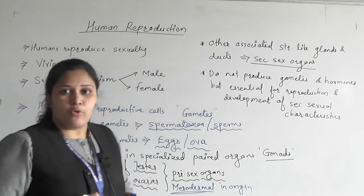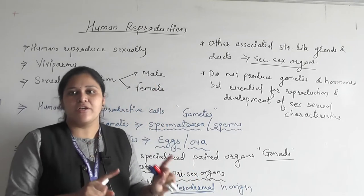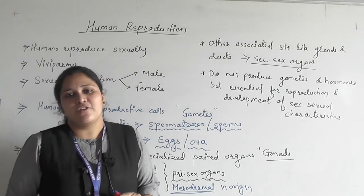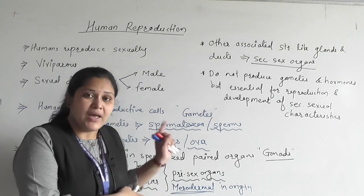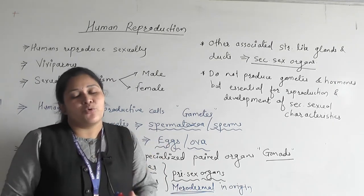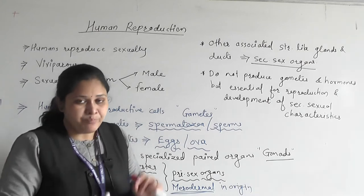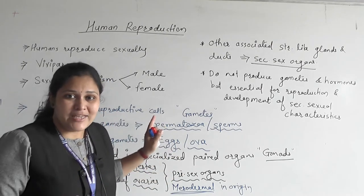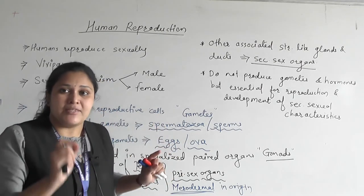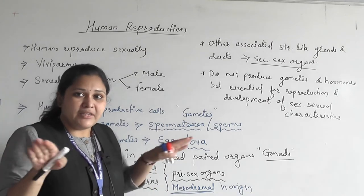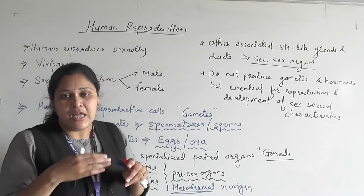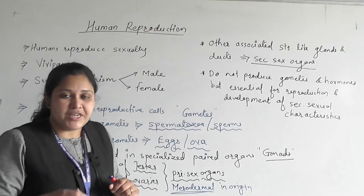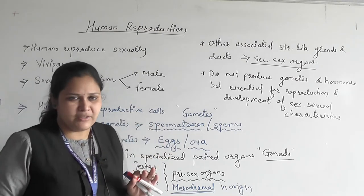So to summarize: primary sex organs are gonads — testes and ovaries — which are mesodermal in origin and are involved in the formation of gametes. Gametes are specialized reproductive cells, haploid in number. Whenever there is a fusion of male and female gametes, it results in the development of a zygote, which restores the diploid condition — as you have already learned in the first lesson.